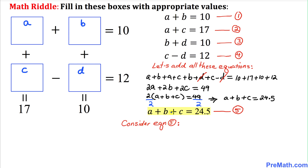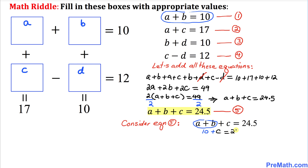Looking at equation 5: A plus B plus C equals 24.5. From equation 1 we know A plus B equals 10, so replacing A plus B with 10 gives us 10 plus C equals 24.5. Moving 10 to the right-hand side, C equals 24.5 minus 10, so C equals 14.5.